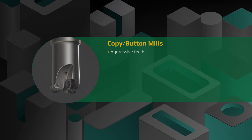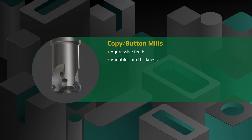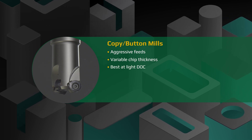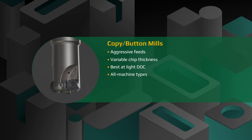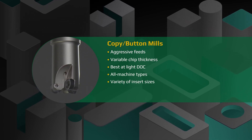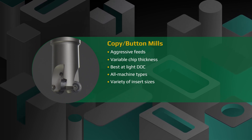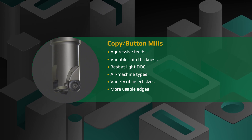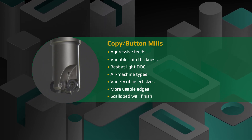Older machines can utilize copy mills at heavy depths of cut and slow to moderate feed rates. But newer machine tools utilize copy mills at light depths of cut and much quicker feed rates, at times rivaling that of high feed. The round shape of a button insert makes it useful for semi finishing operations and helps provide many usable edges per insert. Copy mills will leave a scalloped finish on your workpiece.